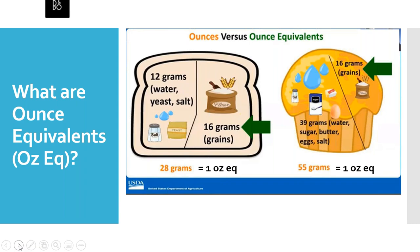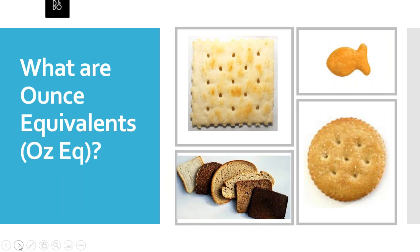We can see that in the example of a slice of bread versus a muffin. To serve a one ounce equivalent of grains, or 16 grams of grains, we need to serve participants one slice of bread or one muffin. But the bread only needs to weigh 28 grams versus the muffin that needs to weigh at least 55 grams. Ounce equivalents also take into account differences in size and shape of different grain foods, so participants always get a specific amount of grain regardless of how big, small, or what shape a grain food is.